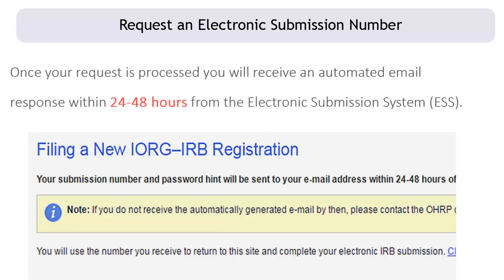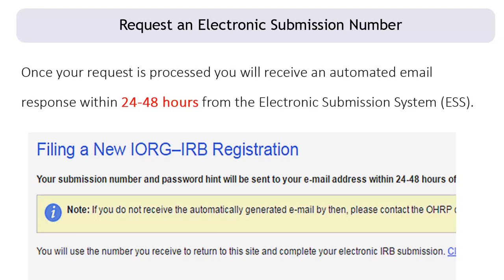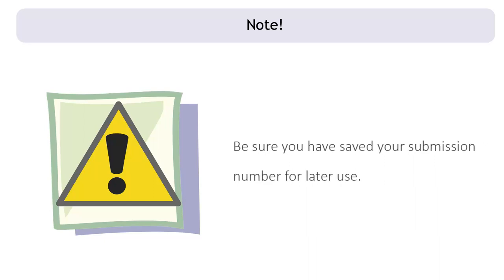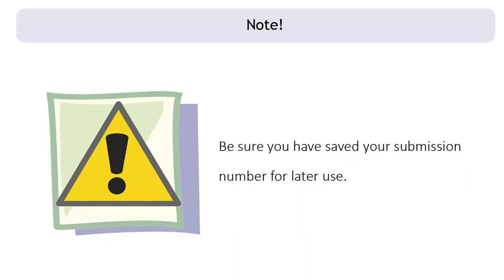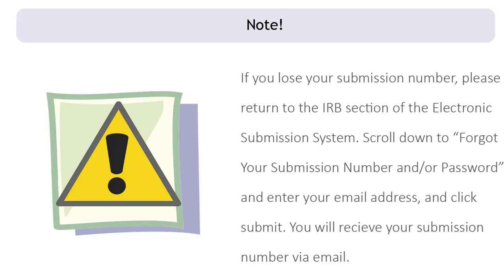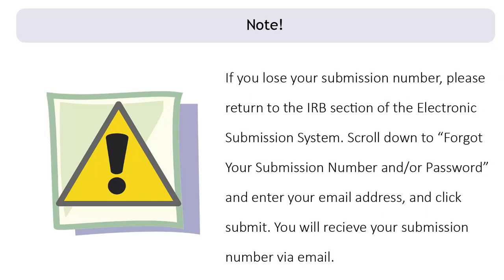Once your submission number request is processed, you will receive an automatically generated email with a submission number within 24 to 48 hours from the electronic submission system. If you do not receive the automatically generated email by then, contact OHRP for assistance. Be sure you have saved your submission number for later use. If you lose your submission number, please return to the IRB section of the electronic submission system, scroll down to 'Forgot your submission number and/or password,' enter your email address, and click Submit. You will receive your submission number via email.